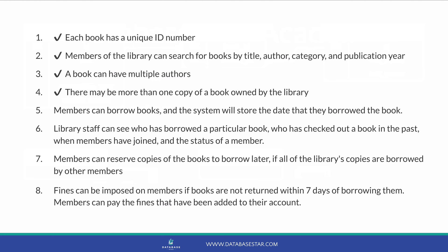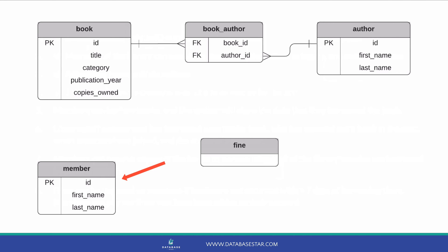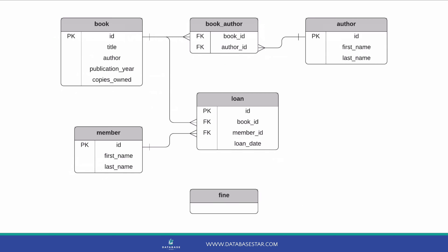We create a new table called member to store the members of the library. We'll give it a primary key of ID, a first name and last name. We'll also add a new table to store books that have been borrowed — rather than borrow, we'll call it loan, since a member takes out a loan on a book. For a loan, we need to store a primary key, the book that was borrowed, the member that borrowed it, and the date it was loaned.